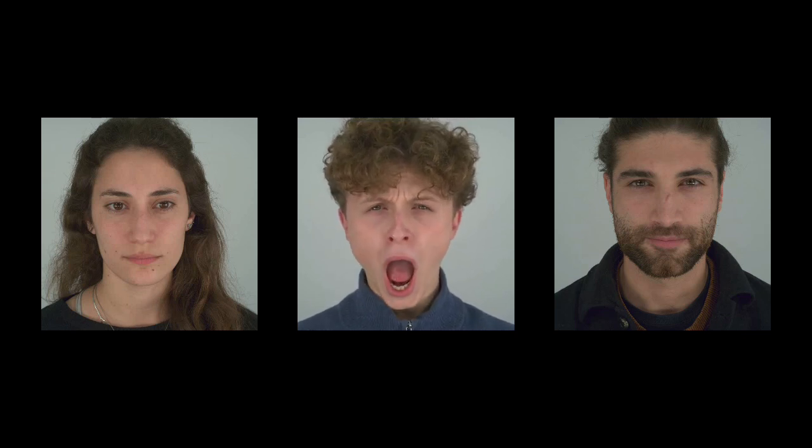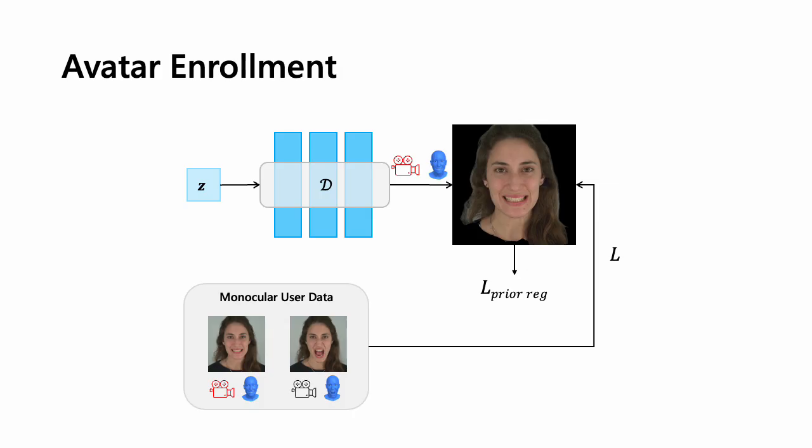We can now use user enrollment data in the form of a single image or short video, like the ones shown here, and fit an avatar for the user. We initialize the decoder for the user using the prior, then optimize a single latent code for that user using all available data. To prevent overfitting, we regularize the output Gaussians towards the prior.